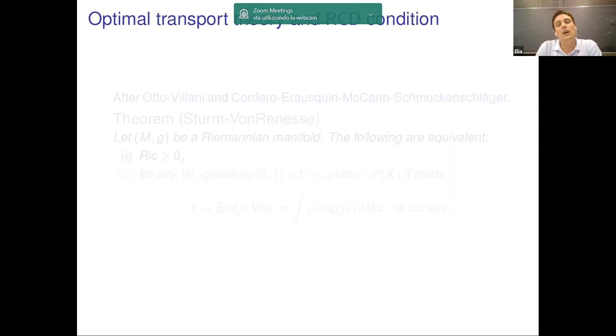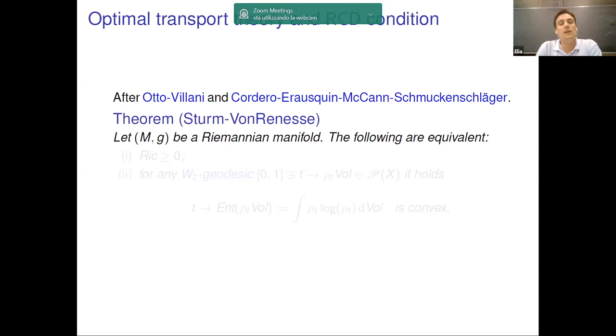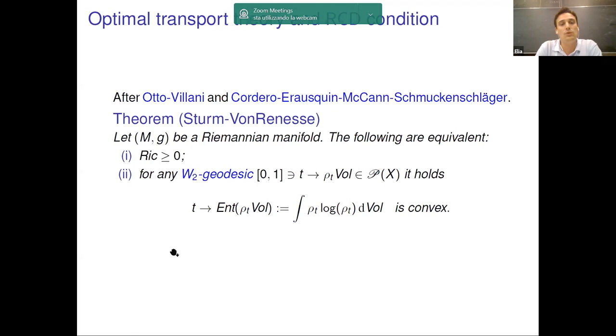Before giving a rough idea of this RCD notion, I would like to present a motivating result. This is a theorem of Sturm and Villani, which is based on previous works of Otto-Villani and Cordero-Erausquin-McCann-Schmuckenschläger. This theorem gives a characterization of smooth spaces with non-negative Ricci curvature in terms of the following convexity type condition, which is a little bit complicated. Let me try to explain it.